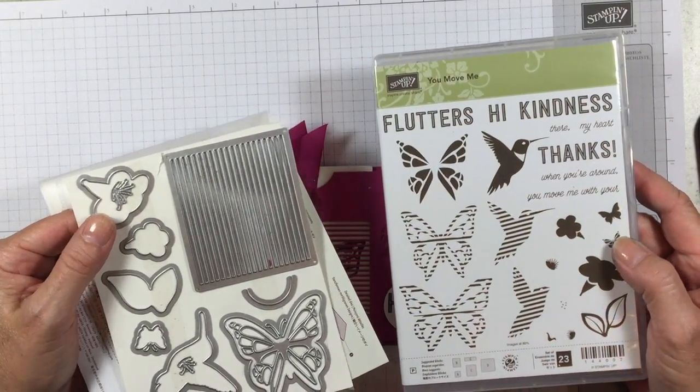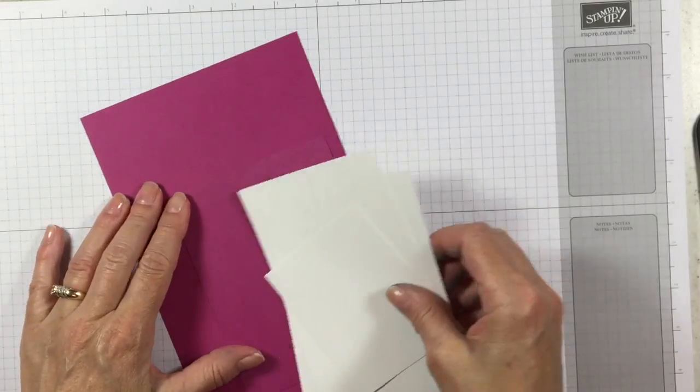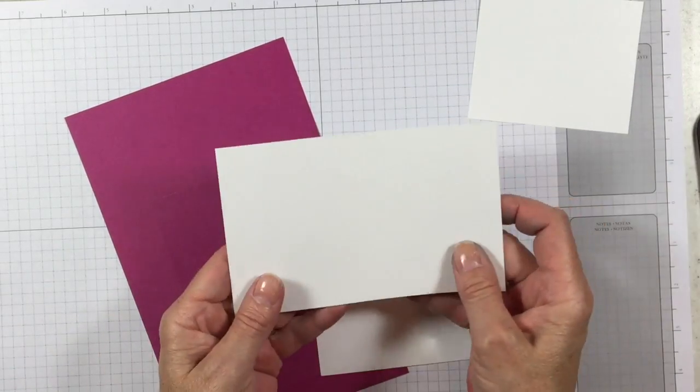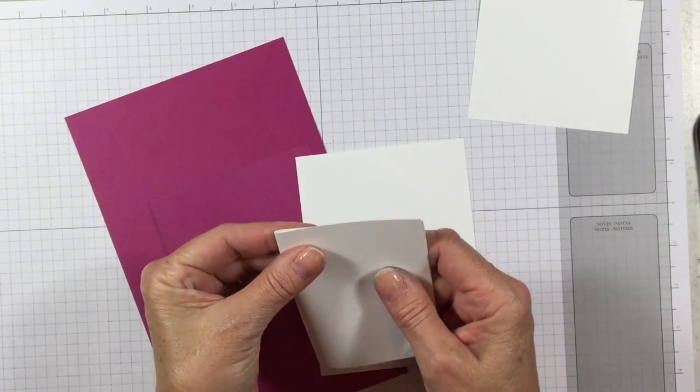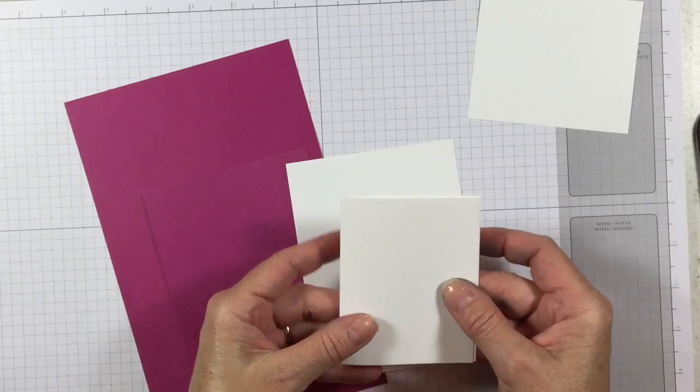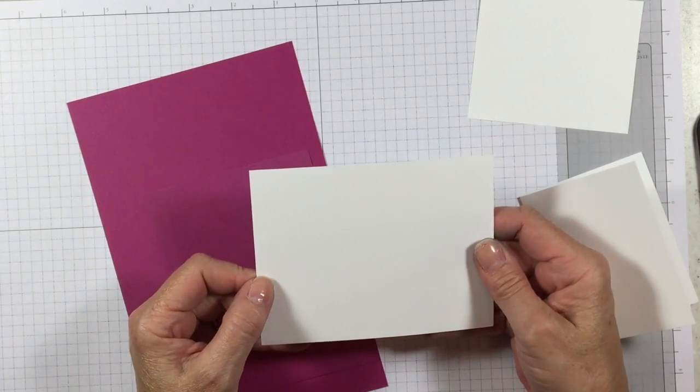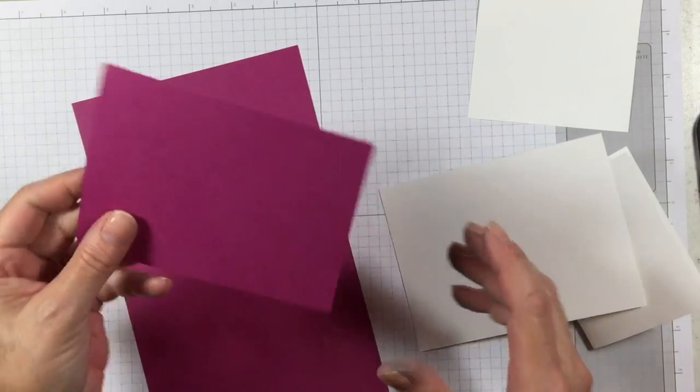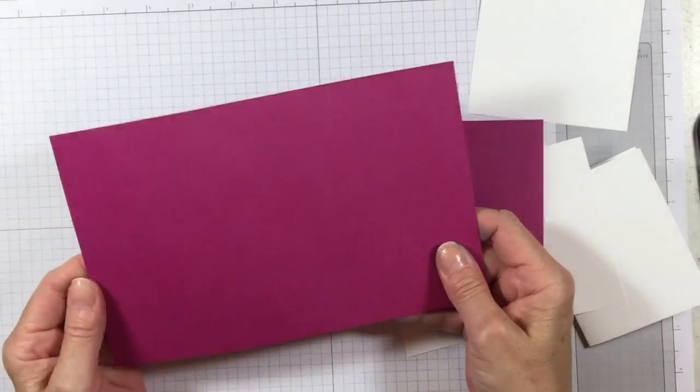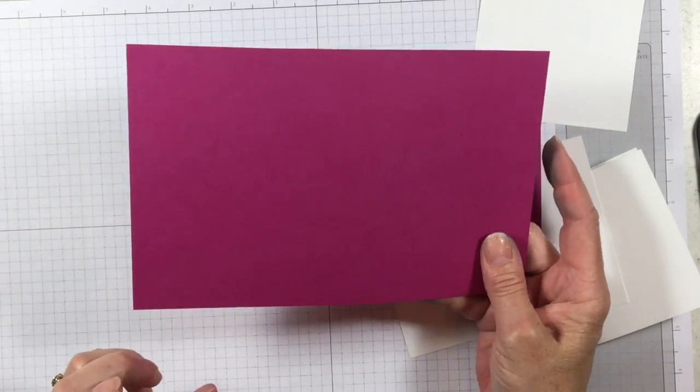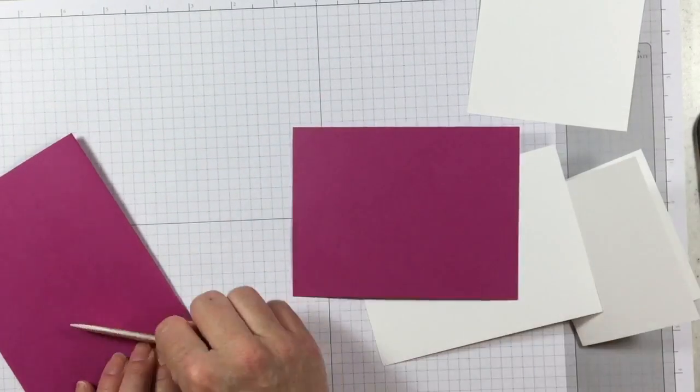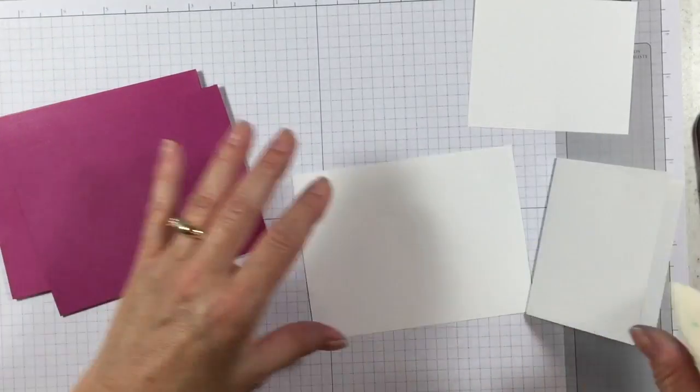Let me show you how easy this is to make. Here's the cardstock we're going to use: a scrap of Whisper White, the little pocket card is 6 by 3 and 3/4 inches scored at 3 inches to fold in half. The inside layer is 4 by 5 and 1/4, the front is also 4 by 5 and 1/4 in the new berry burst, and our card base is 5 and 1/2 by 8 and 1/2, standard size.